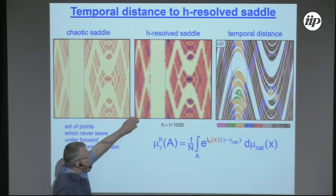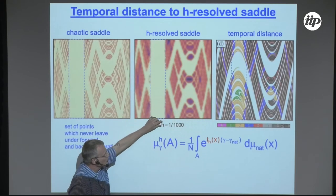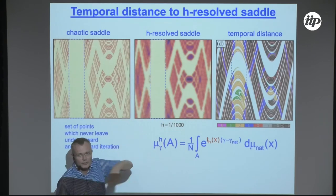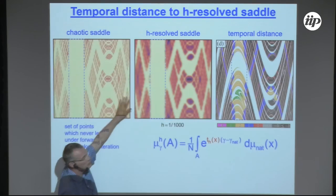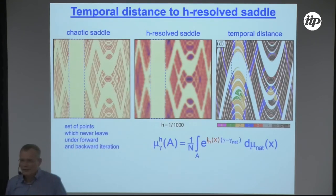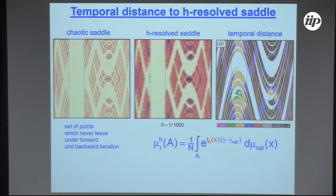We smooth the saddle on the scale of h-bar. So for Planck's constant equal to one over a thousand, that's a certain size in phase space, and we smooth it out on some area. We do the most primitive thing: we take the square root of that area as a length.